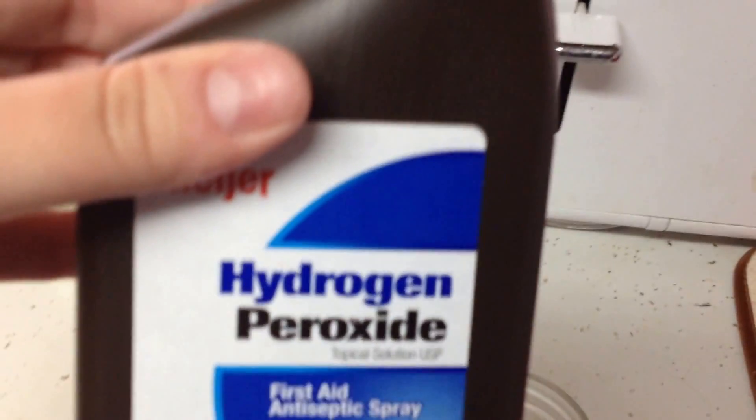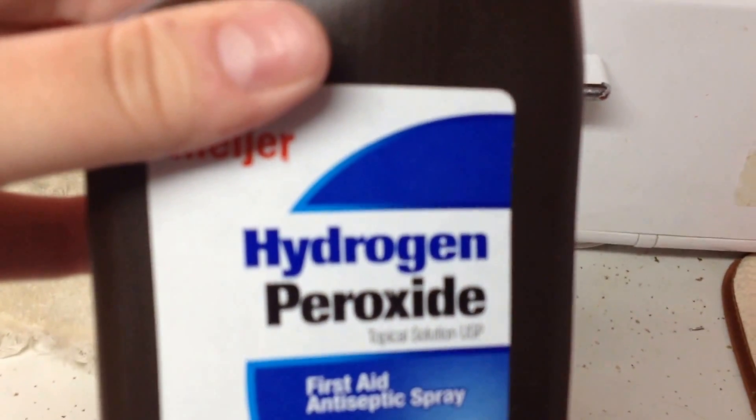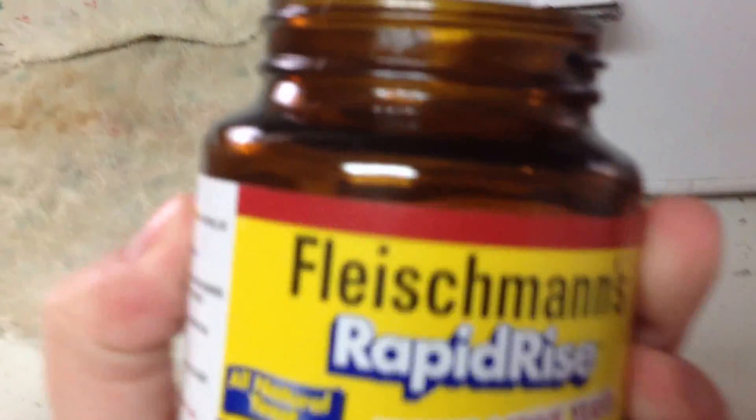Hydrogen peroxide decomposes into hydrogen and oxygen gas on its own, but it can take a long time. But it turns out that this reaction can be easily catalyzed by adding just a little bit of yeast.